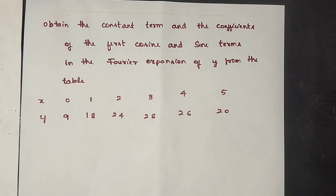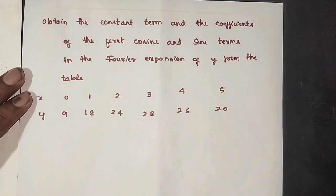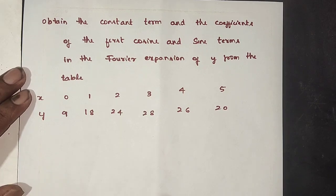Next question: obtain the constant term and coefficient of the first cosine and sine terms in the Fourier expansion from the table.